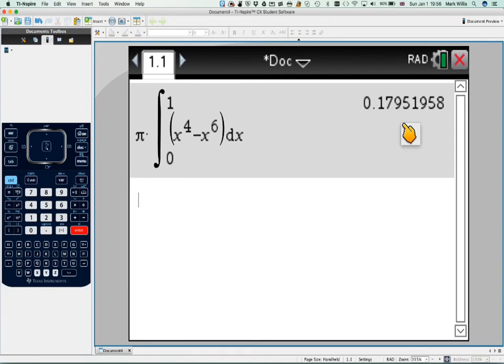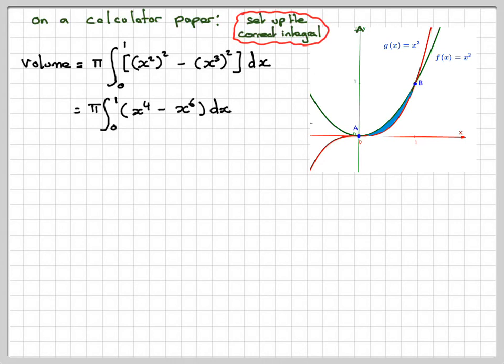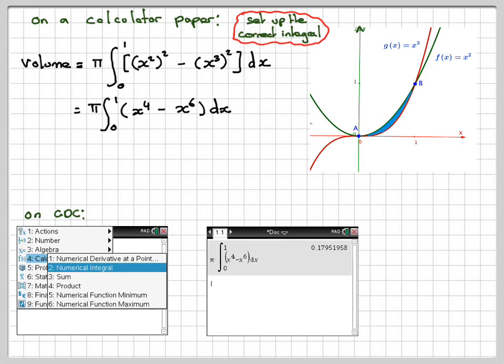And we get a numerical answer. So 0.1795 on the GDC. There's our screenshots. So writing down the numerical values, round it off correctly to 3 significant figures. That 5 makes it 9.10. So it becomes 0.180 cubic units to 3 significant figures.